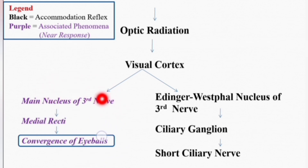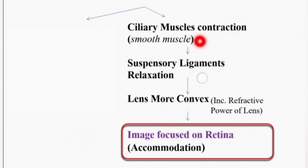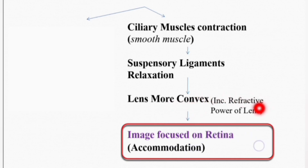Coming back to the accommodation reflex — from the short ciliary nerves, the impulses go to the ciliary muscle. The short ciliary nerve supplies the ciliary muscle and causes its contraction. It is a smooth muscle. When the ciliary muscle contracts, the suspensory ligaments or zonular fibers are relaxed, and as a result the lens becomes more convex or more globular, its refractive power is increased, and the image is focused on the retina. This is the process of accommodation.